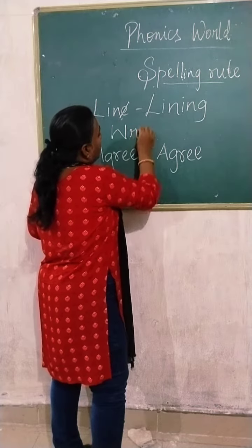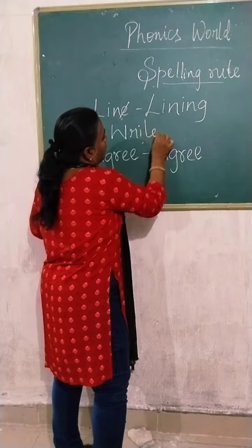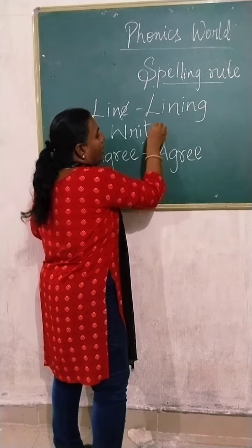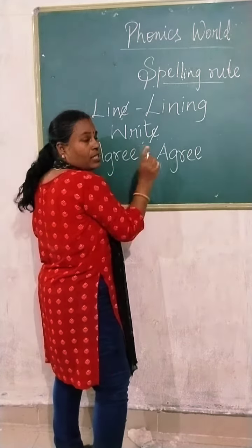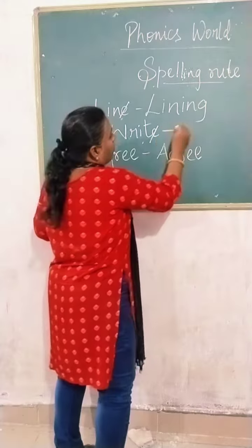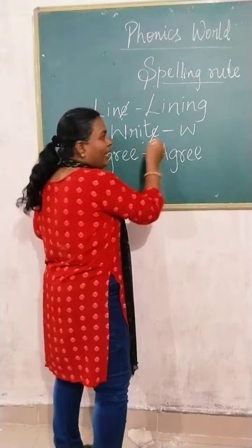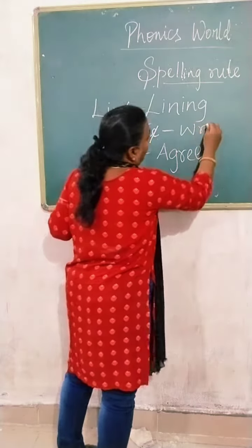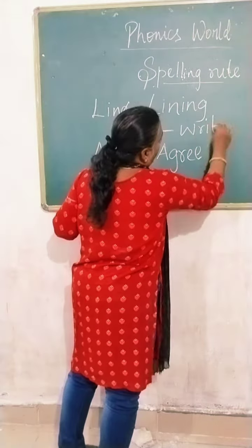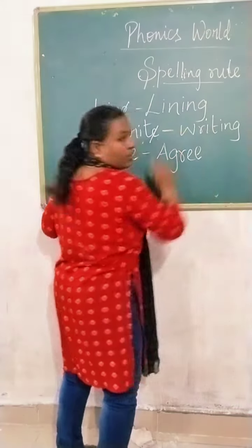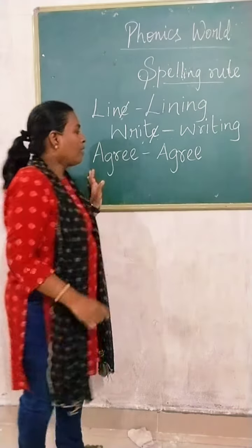Another word — take 'write.' Here we also have a single E. Just eliminate the E and add 'ing.' Write becomes 'writing.'